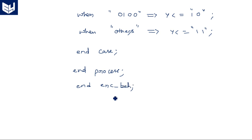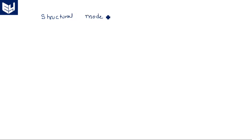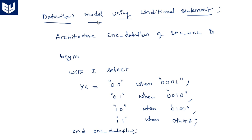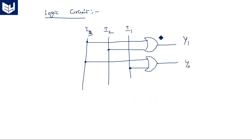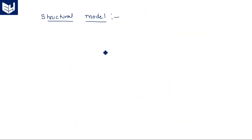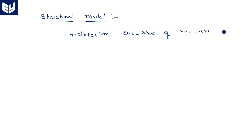Now, structural model. Structural model is very easy. We have already seen the internal architecture of this 4x2 encoder. The internal architecture consists of two OR gates — with inputs I3, I2 and I3, I1 respectively. So: architecture encoder_structural of encoder_4by2 is.